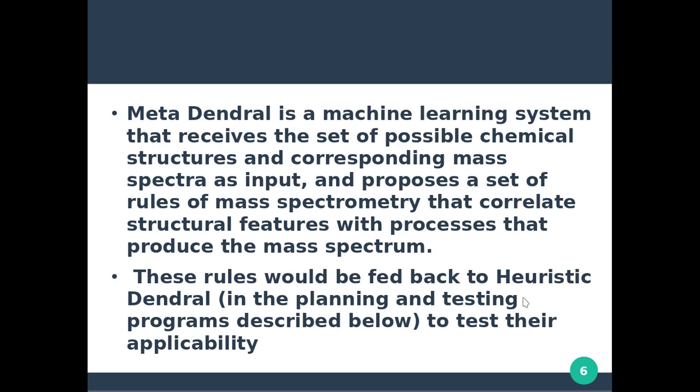Meta-Dendral is a machine learning system that receives a set of possible chemical structures and corresponding mass spectra as input, and proposes a set of rules of mass spectrometry that correlate structural features with processes that produce the mass spectra.